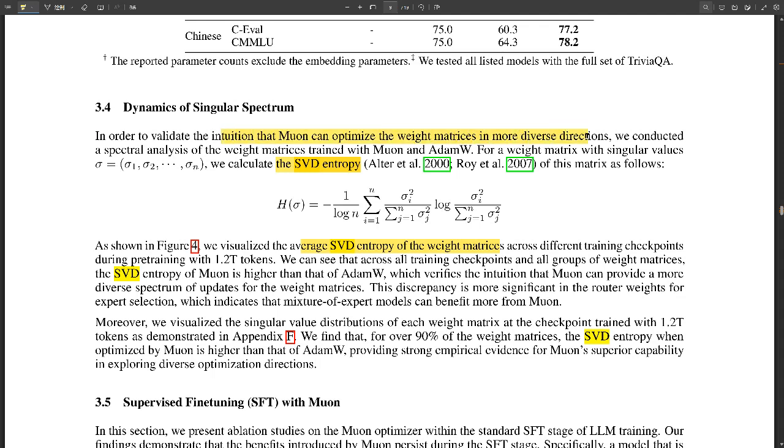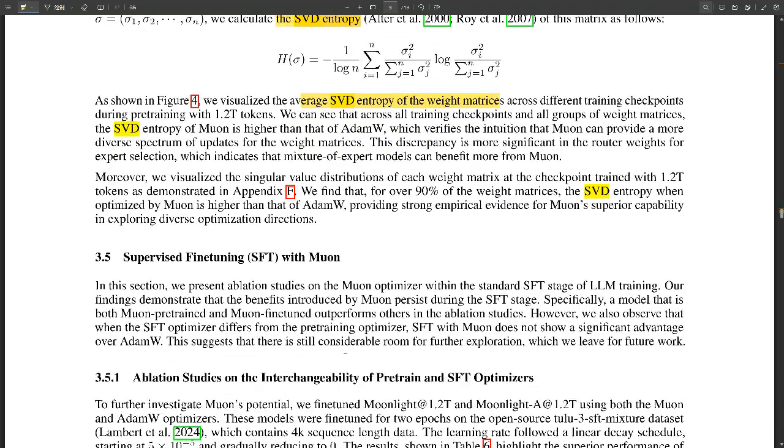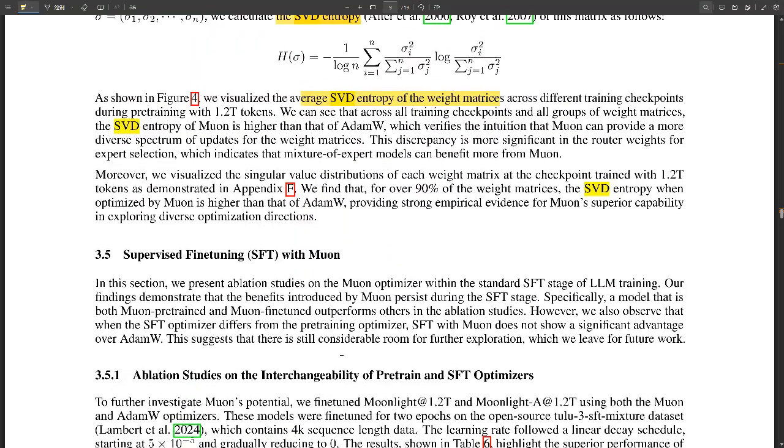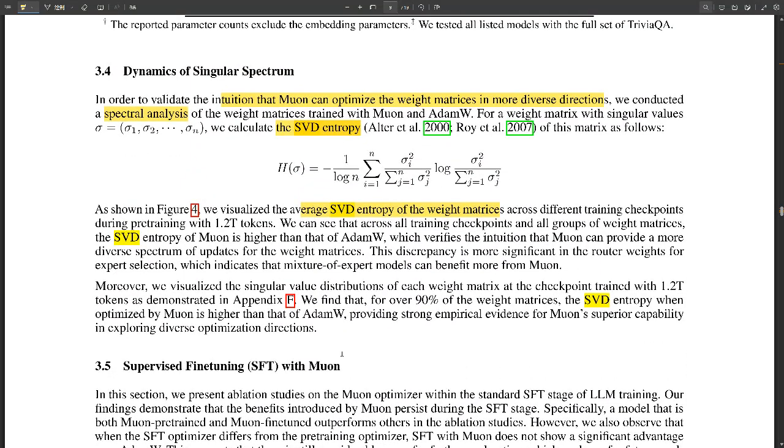And guess what? Muon consistently achieves higher SVD entropy than AdamW, which suggests that it's better at exploring all those different paths during training, and that ultimately leads to better performance. That's fascinating. It's like Muon is encouraging the model to be more creative in how it learns, but you mentioned earlier that Muon behaves differently during pre-training versus fine-tuning. Can you tell us more about that?